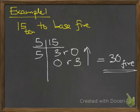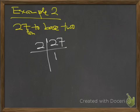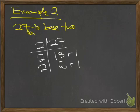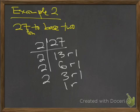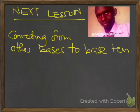Next: convert 27 to base 2. 2 into 27 is 13 remainder 1. 2 into 13 is 6 remainder 1. 2 into 6 is 3 remainder 1. 2 into 3 is 1 remainder 1. 2 into 1 is 0 remainder 1. Reading upwards, the answer is 11011 base 2. Next lesson we will be looking at converting from other bases to base 10.